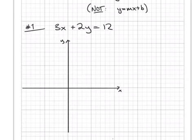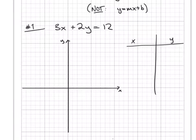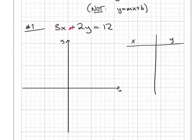An XY table is a pretty simple thing. You've got your x side and your y side, and you plug in something for x and get out something for y. This one's a little different because it doesn't work quite like a function with a clear input and output — the input and output variables are both on the same side of the equation.